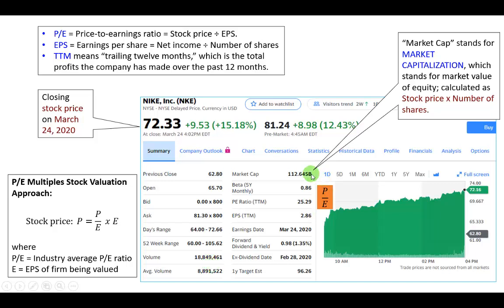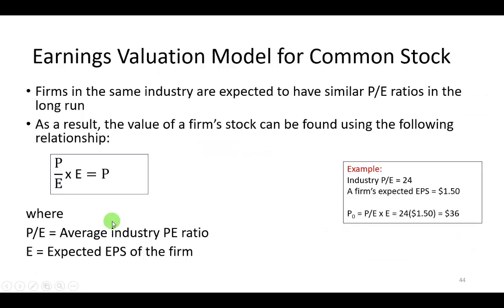Let's take a second look at the P/E ratio. With it, we can craft a relationship to help estimate the firm's stock price if we believe a firm is comparable to the average firm in its industry. We call this the P/E multiple stock valuation approach, whereby we multiply the average industry P/E ratio by the earnings per share of the underlying firm. Algebraically, multiplying P over E by E gives us P — the price of the stock.